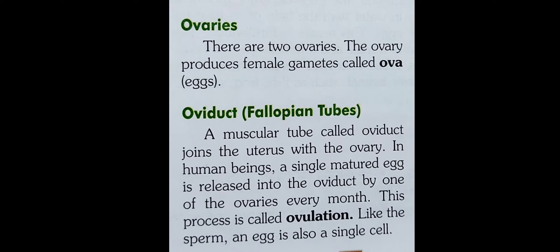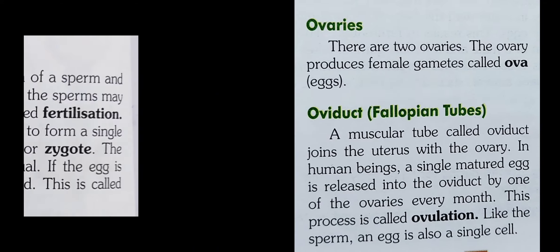There are two ovaries. The ovary produces female gametes called ova. A muscular tube called the oviduct joins the uterus with the ovary. In human beings, a single mature egg is released into the oviduct by one of the ovaries every month. This process is called ovulation.